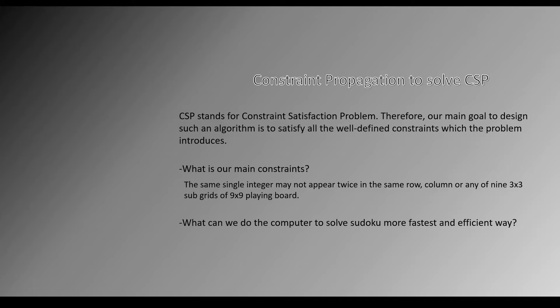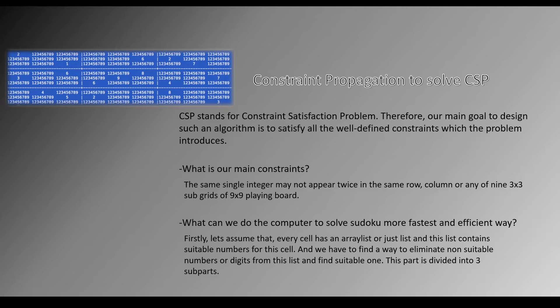What can we do to make the computer solve Sudoku in a faster and more efficient way? First, let's assume that every cell has an array list containing suitable numbers for that cell. We have to find a way to eliminate non-suitable numbers or digits from this list and find the suitable one. This part is divided into 3 sub-parts. As you can see in this example, every unfound cell has a list of suitable numbers, and we have to eliminate them.